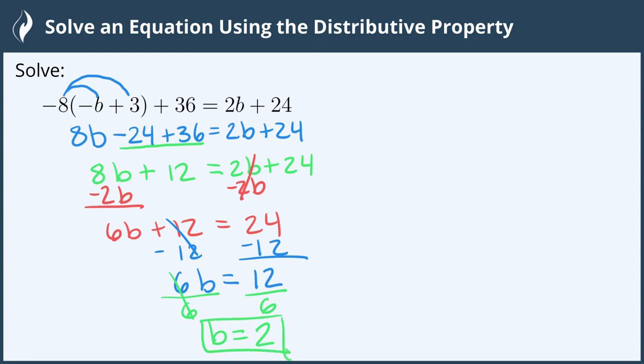So our solution is b equals 2. We can go ahead and check this and it's recommended that you do, by substituting your solution, in this case b equals 2, back into every variable in the original equation. However I won't be demonstrating that here. You can try it on your own.